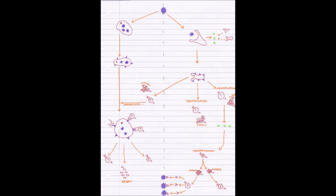This phagocyte is even more clever than attracting more of its own friends. As it engulfs, digests, and breaks down this pathogen using its lysosomes and enzymes, it does not break down the pathogen's antigens. Instead, it takes those antigens and displays them — presents them — on its cell surface membrane. This cell then becomes known as an antigen presenting cell, taking the antigens and presenting them on its cell surface membrane.